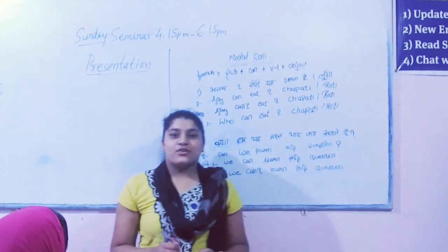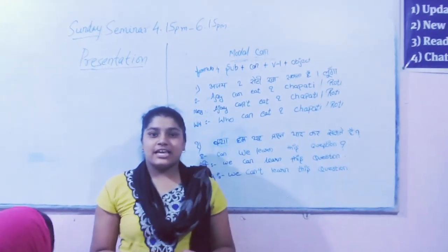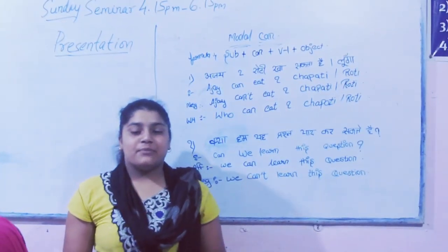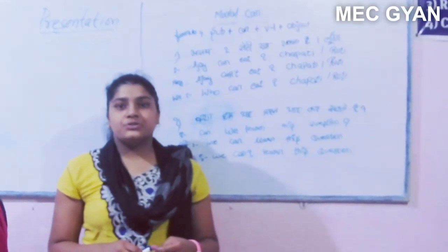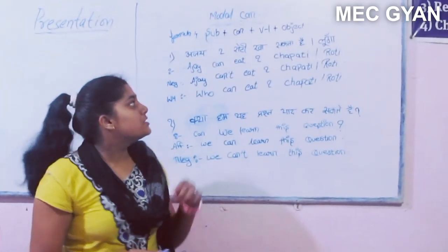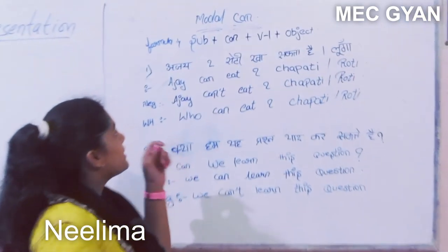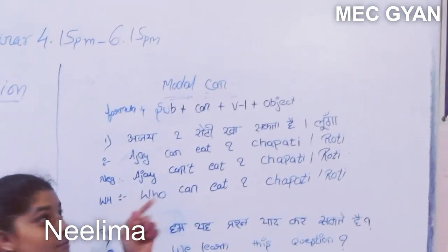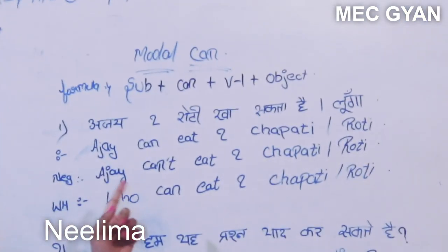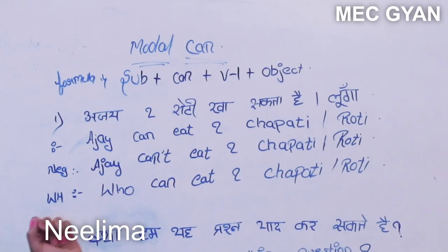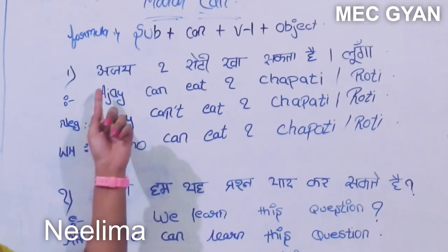Hello friends, you are watching M.S.T.Y.A.R. and I am Nilima. We are going to learn about the modal verb 'can'. The formula is: Subject plus can plus verb (first form) plus object.